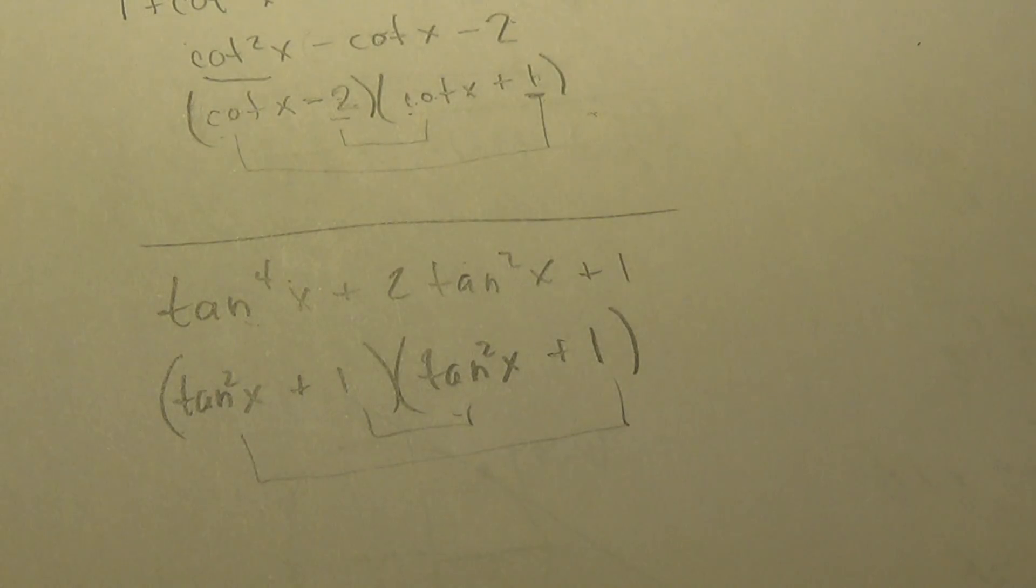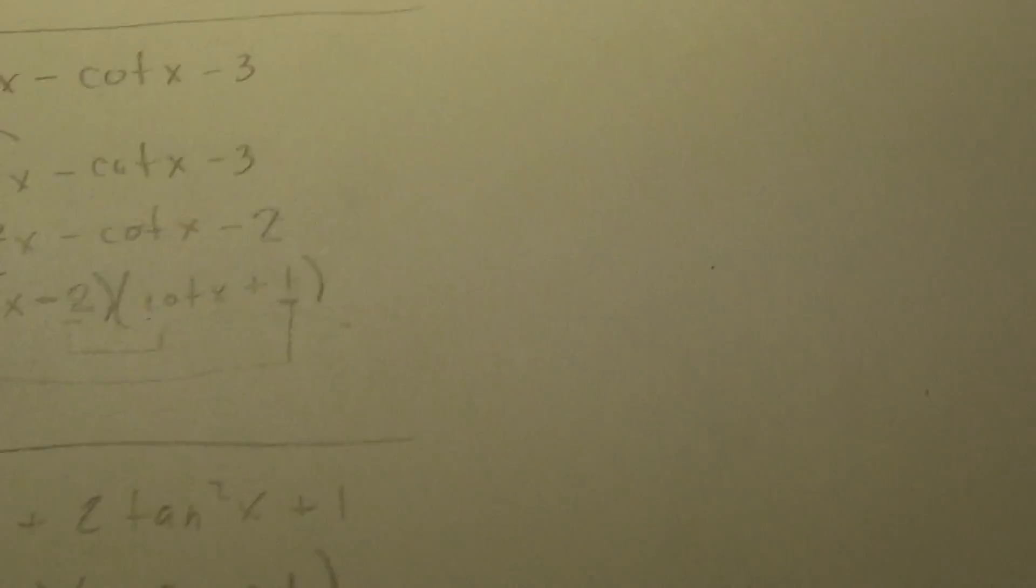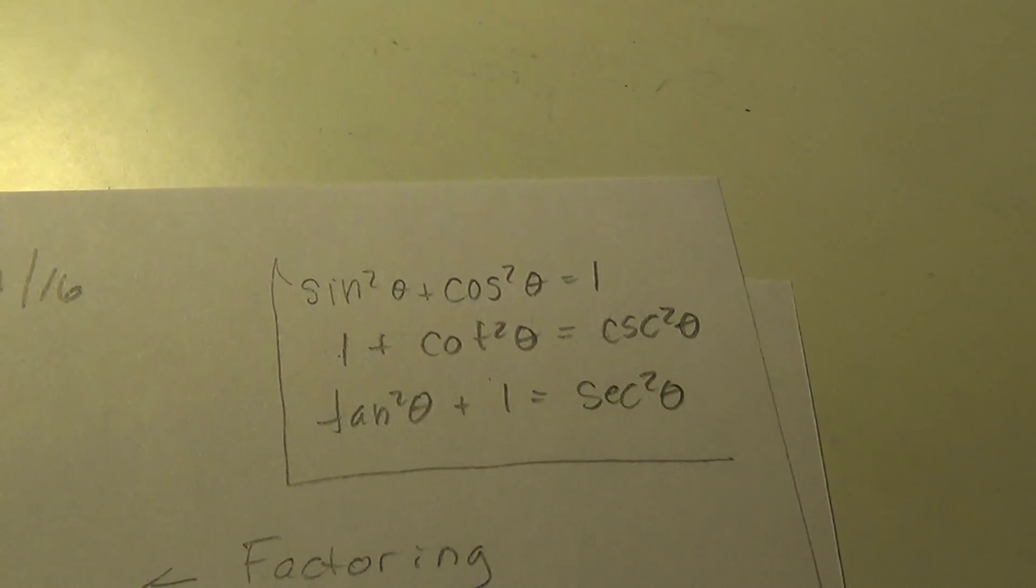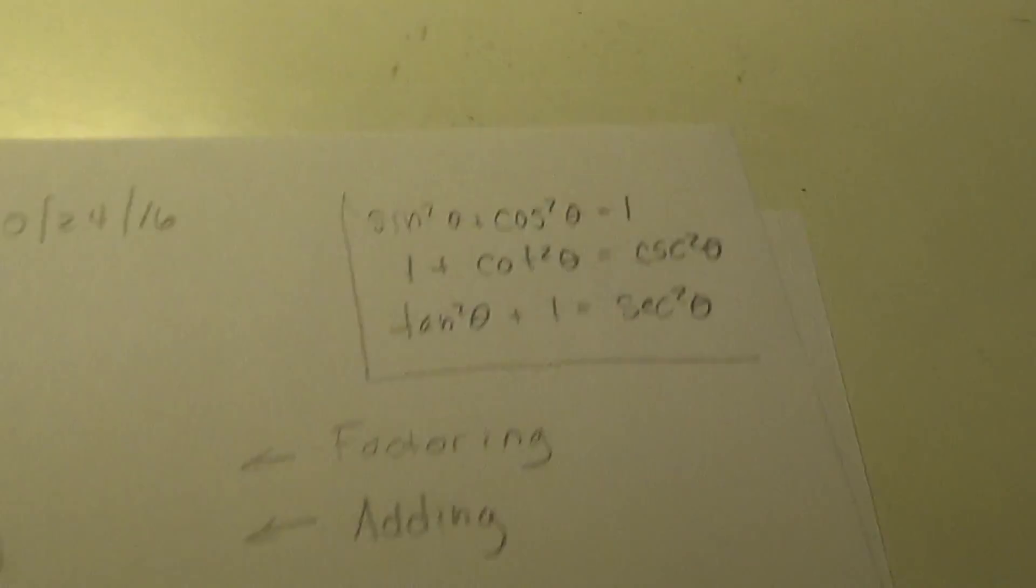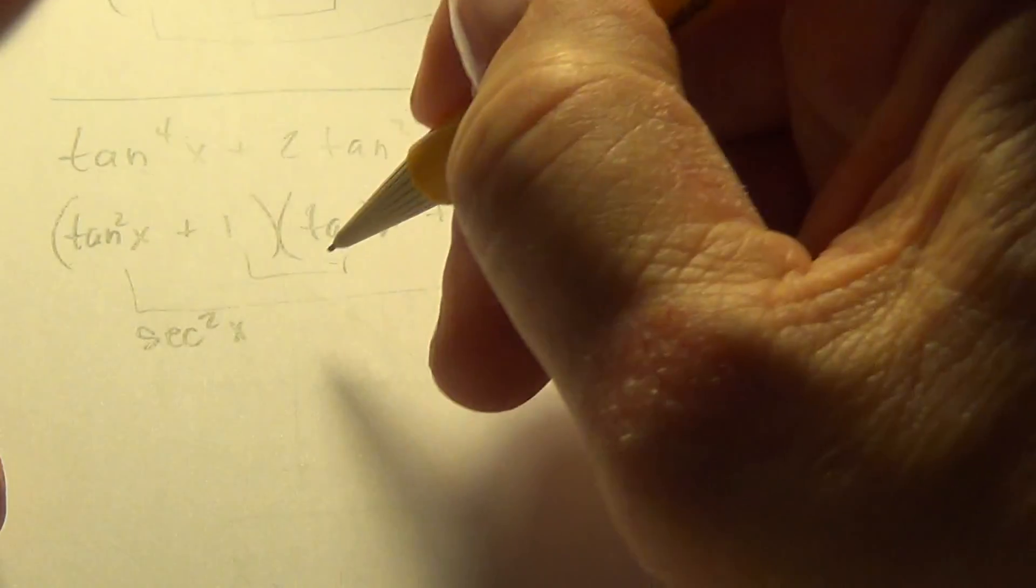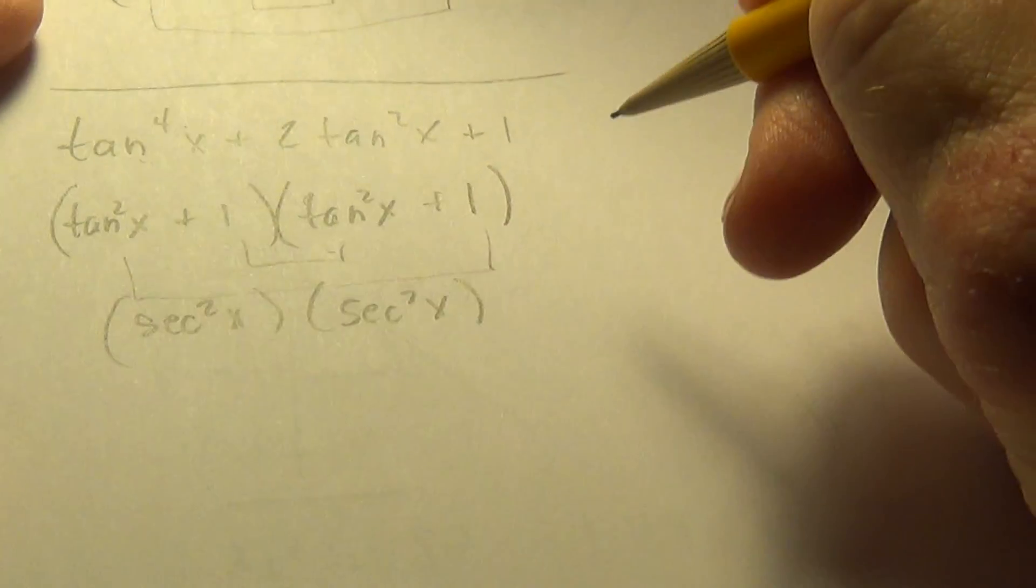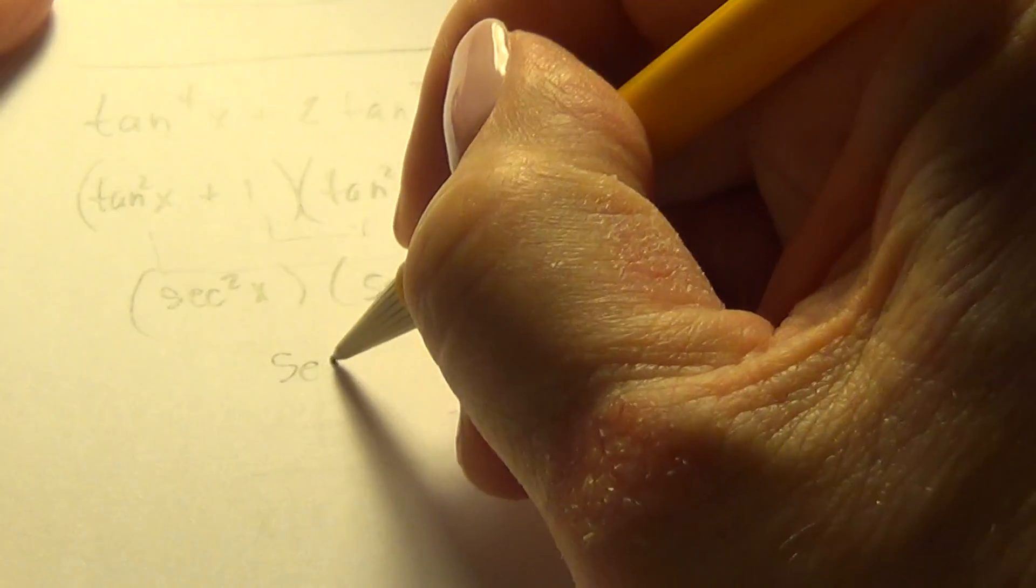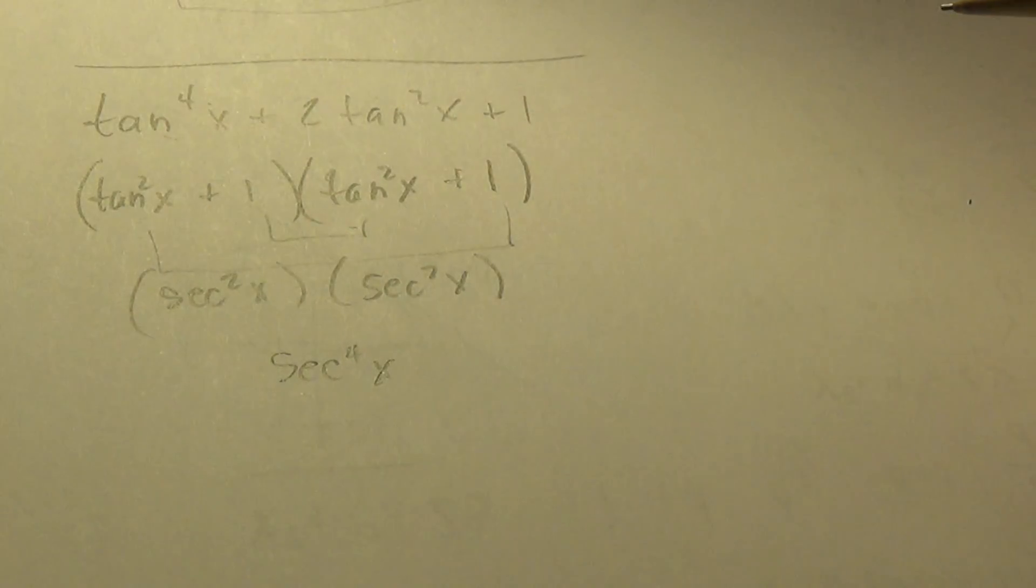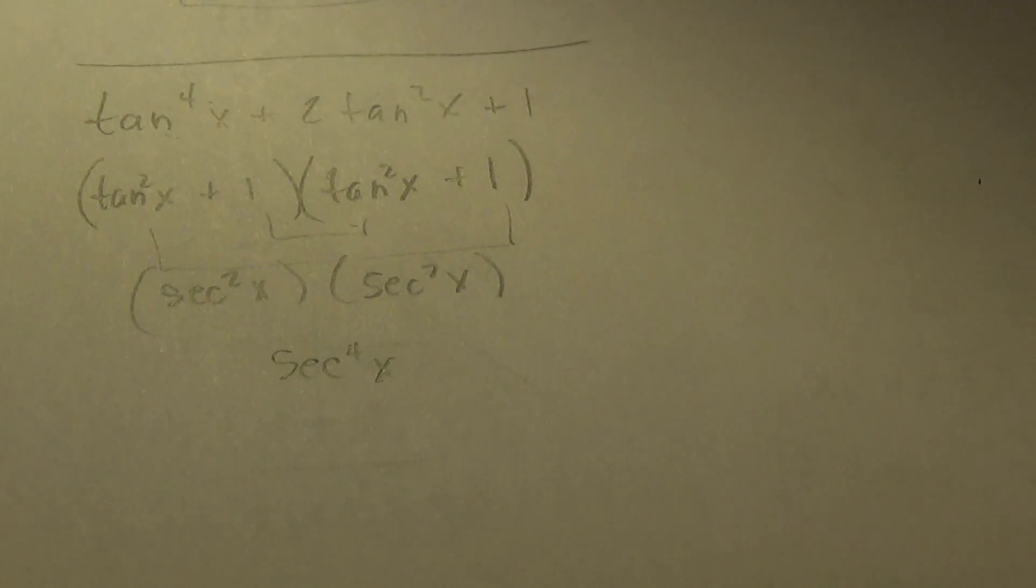So what can I do once I'm at that spot in order to simplify it? Well, I see that a tangent squared plus one. If I look up here, my Pythagorean IDs, I see that it's secant squared. So I can come back here and call this secant squared. And this is also, and then I get secant to the fourth, x. And that is as simplified as this will go.